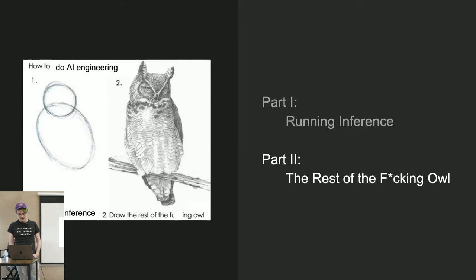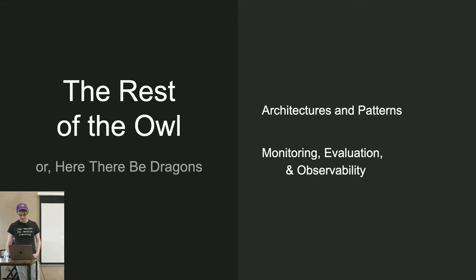A lot of effort has gone into thinking about the engineering of inference, but not so much success has been had at engineering the rest of the whole product around inference that actually delivers value — much like two beautiful mathematical solids that provide the bones or interior but not the whole thing. So let's talk about architectures and patterns for uses of language models, and then talk about first attempts at making these things better over time with monitoring, observability, and evaluation.